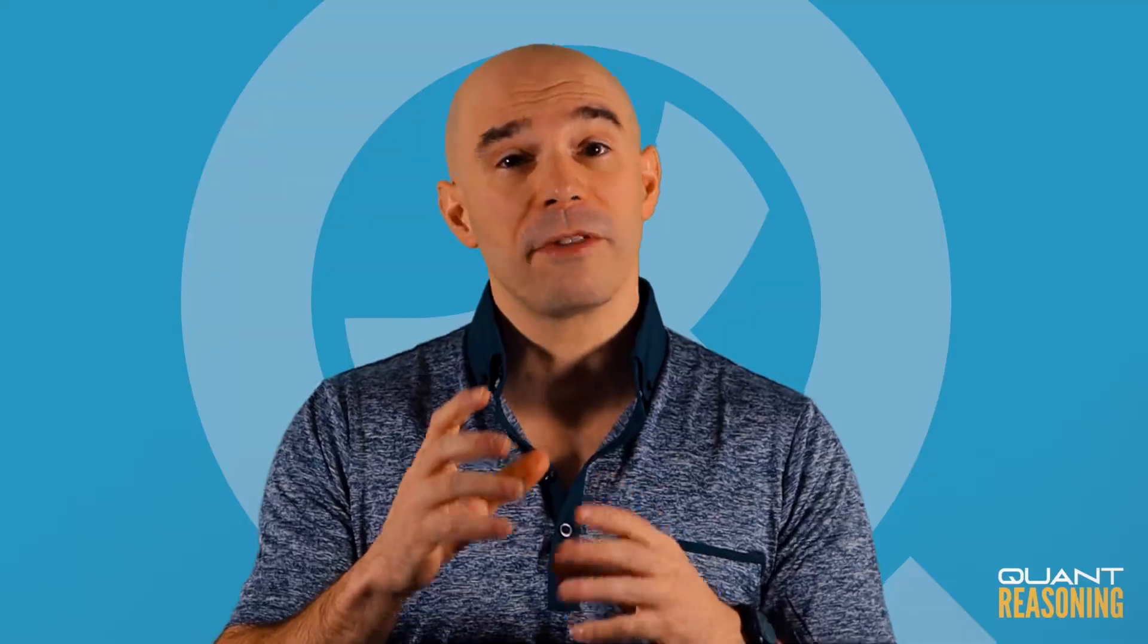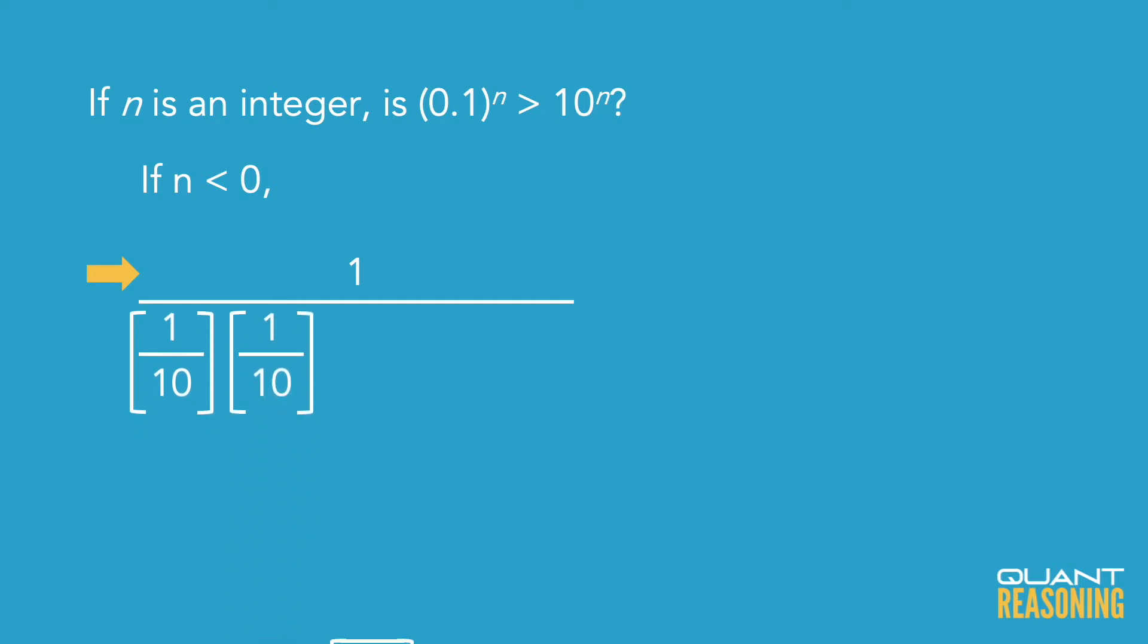So with a negative exponent, we just have to think about the situation as if it's in the denominator of some fraction where the numerator is 1. But that kind of turns everything on its head in this case because suddenly it's not 1 tenth times 1 tenth times 1 tenth a bunch of times. It's 1 over 1 tenth times 1 tenth times 1 tenth.